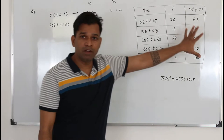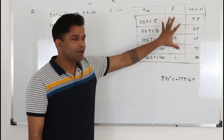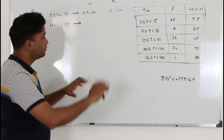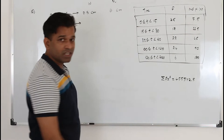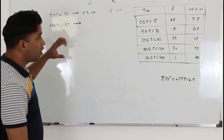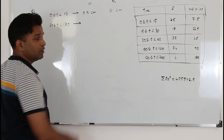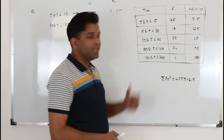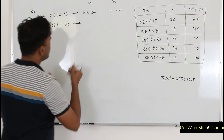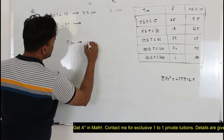Using the information in the table, a histogram is drawn. The interval 0 to 15 is represented by a bar with width 0.5 centimeter and height 6 centimeters. We want to find the width and height of the bar representing the interval 60 to 120. When drawing a histogram, the width of the bar represents the class interval. In this case, the class interval of 15 is scaled to 0.5 centimeter.